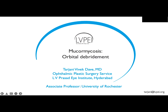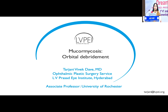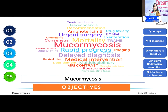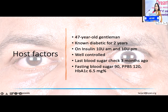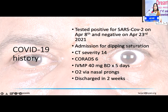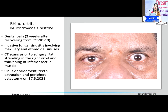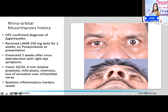Namrata spoke about exenteration in mucormycosis; there's also a smaller surgical modality which is localized orbital debridement. Exenteration is the most advanced form where you remove everything, but you can have more localized orbital debridement for patients who do not have severe orbital involvement. Here is a 47-year-old gentleman who is diabetic, HbA1c slightly on the higher side, tested positive for COVID, required admission for dropping saturation, had a high CORADS and CT severity score, was treated with IV methylprednisolone, and then discharged in two weeks.